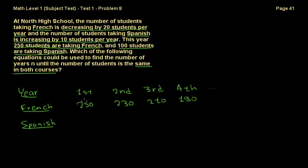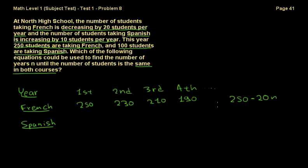So if you want to get to the fourth year, you say 250 minus 20 to get to the second year, minus 20 to get to the third year, minus 20 to get to the fourth year. How many times do we subtract 20? That's 3, because 3 years have passed. So the formula appears: 250 minus 20n, where 250 is the initial number of students and n is the number of years that have passed.